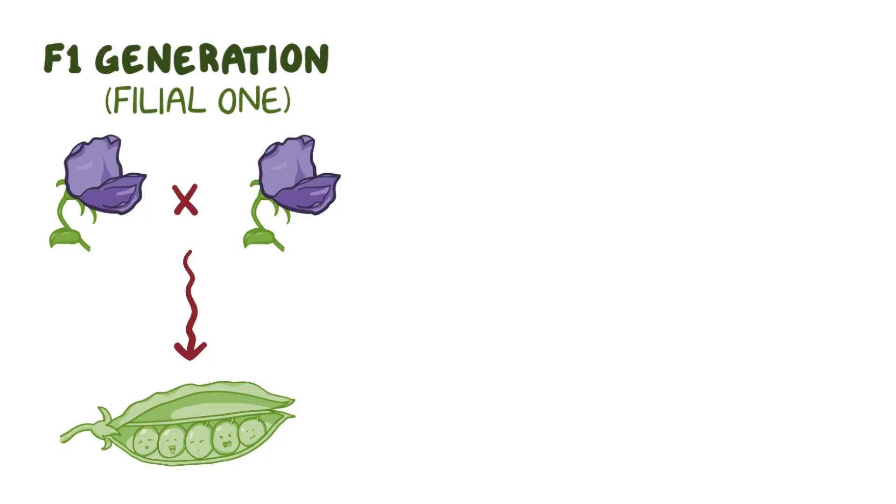Next, Mendel let the violet flowers in the F1 generation cross-pollinate amongst themselves, and when they formed peas, he planted them again. From this he got more plants, and the flowers from the second generation of plants he called filial 2, or F2.